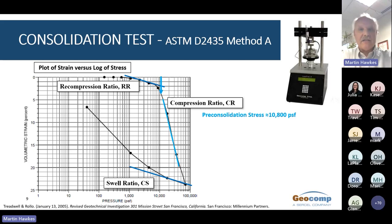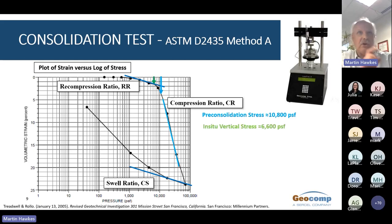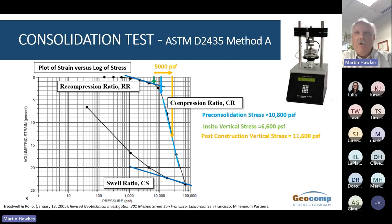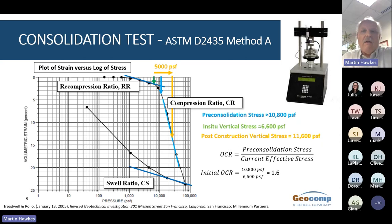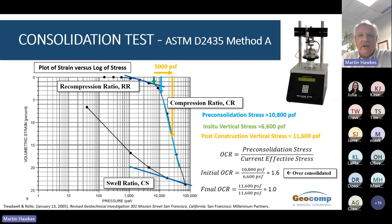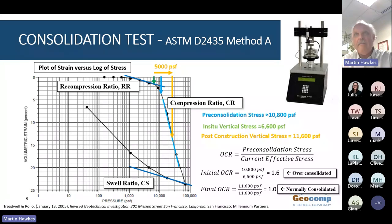The in-situ vertical stress at the sample location is estimated to be about 6,600 PSF, as shown by the green arrow. The net increase from tower construction is about 5,000 PSF, for a total stress of about 11,600 PSF. The over-consolidation ratio, or OCR, is defined as the ratio of the pre-consolidation stress to the current effective stress. The OCR from this test is calculated to be about 1.6. The final consolidated stress from the tower increases the OCR from a starting value of about 1.6 to a final OCR of 1.0. For this test, the load on each increment was maintained for 24 hours, as specified by ASTM D2435 Method A.